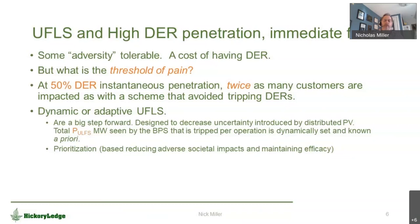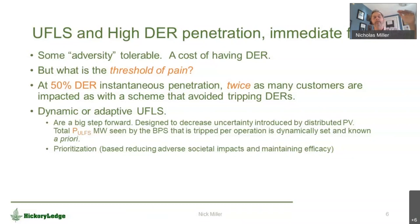There are some steps forward. Some utilities — for example, HELCO on the big island — have already wrestled with this. The idea is that at the least we can keep constant monitoring of the total power that will be beneficial to the bulk power system that is tripped per operation, and dynamically decide how the under frequency load shedding is armed. That is a significant increase in intelligence over the set-it-forget-it approach. But it doesn't address the adversity aspect — we're still going to disconnect more customers than we strictly need, but at least we're going to disconnect the right amount. And by doing that, we can set some priorities on who gets tripped in a dynamic fashion rather than today's usual practice of trying to do that once and passively.